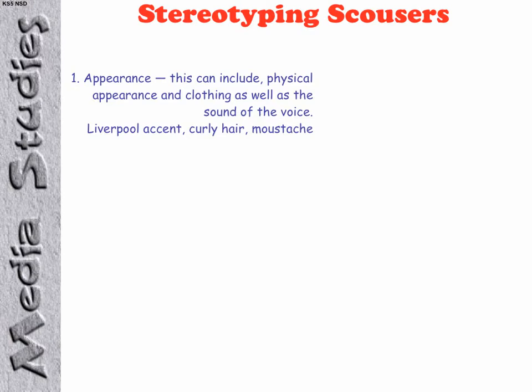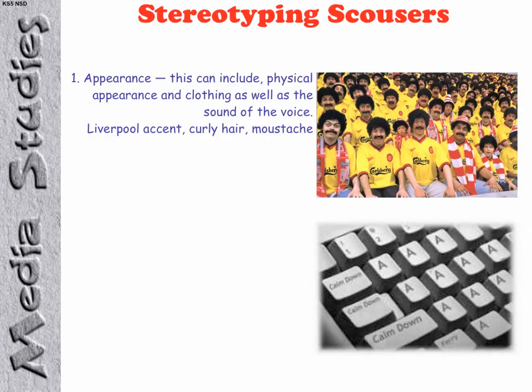So the first element of a stereotype is appearance. This can include physical appearance and clothing, as well as the sound of the voice. In terms of the Scouser stereotype, what we've seen over the years is obviously a thick Liverpool accent, curly hair and moustache. Here are just two virals that use appearance: first, the Scouse wig and moustache on all of the football fans in the stadium. The second viral is an image of a computer keyboard which has all its letters replaced by the letter A, and where there should be tab, shift and caps lock, the words 'calm down'.